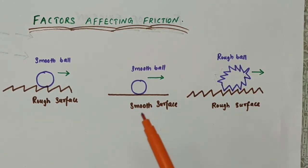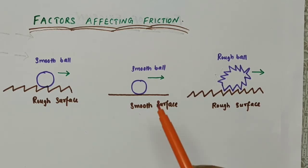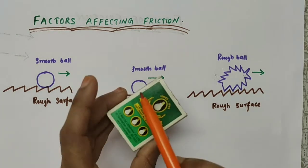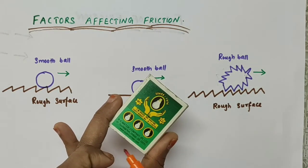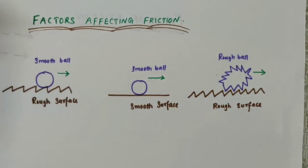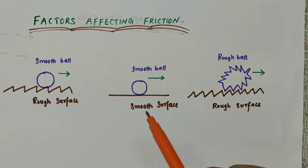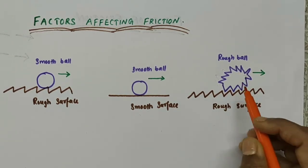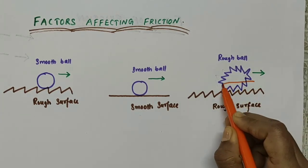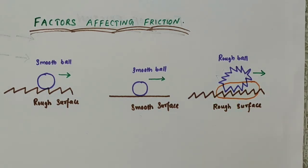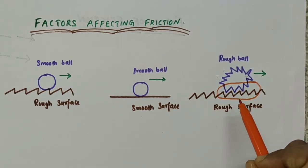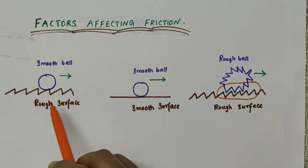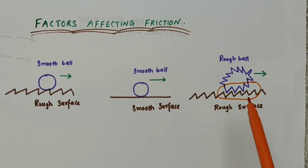Why? Because friction is caused by the irregularities on the two surfaces in contact. If we consider the surface of this box, though it appears very smooth, it has a large number of minute irregularities on it. Similarly, the surface of a ball, though it appears smooth, will have a large number of irregularities. The irregularities on the two surfaces lock into one another. So when we attempt to move any surface, we have to apply a force to overcome this interlocking. On rough surfaces, there are a large number of irregularities, so the force of friction is greater if a rough surface is involved.